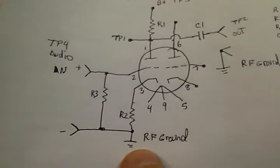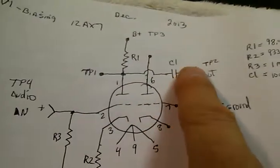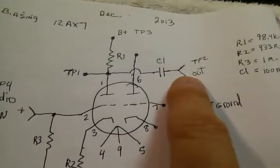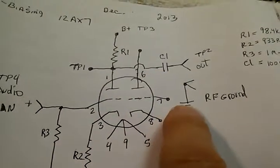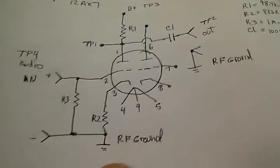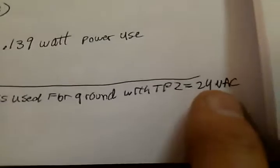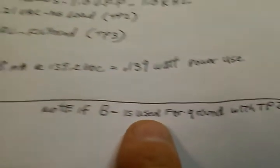Here's the schematic. We've got B plus over here, but if we take the output and use B minus for the ground instead of the RF ground, we're going to get a difference of voltage, about 24 volts versus about 39.